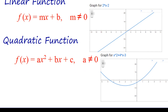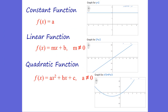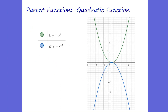Quadratic functions are in the form of f of x equals ax squared plus bx plus c. A, b, and c are all constants. Obviously, a cannot be 0 because then it would be a linear function. And this gives us what's called a parabola.